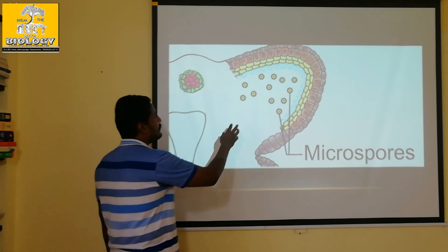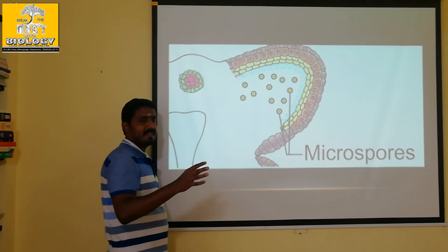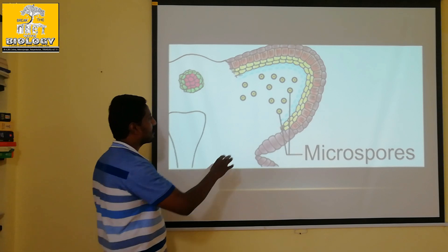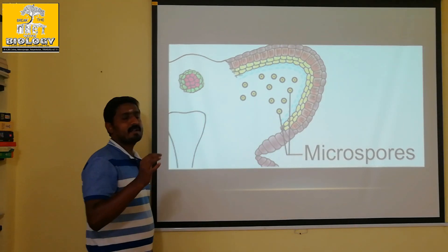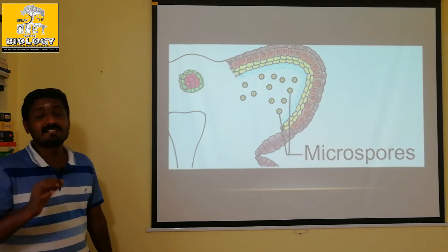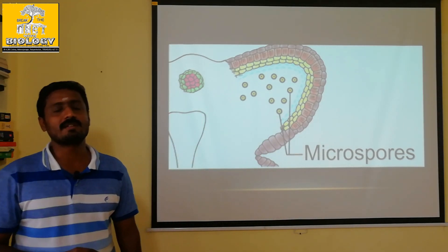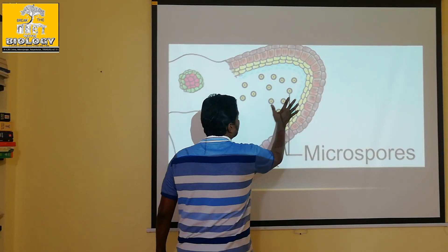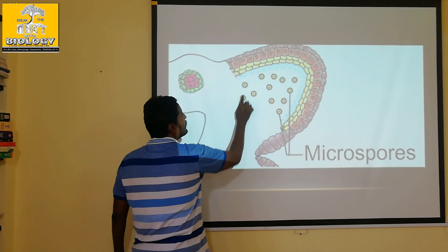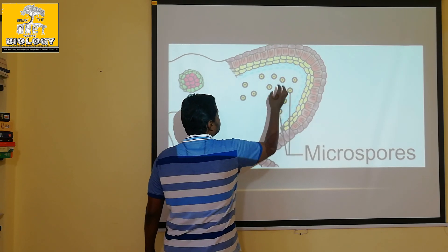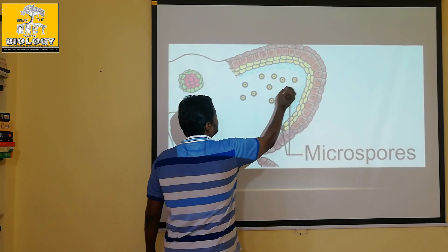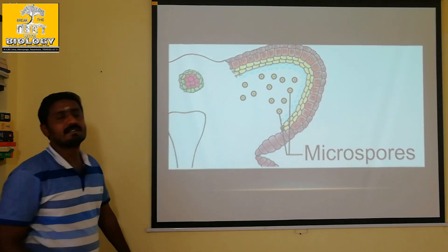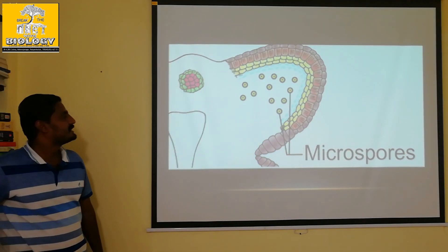The microspore stage is developed. The microspore stage is in the tetrad stage — actually attached. The wall layer is attached and the microspores are spread.